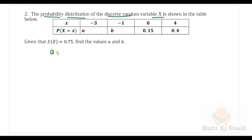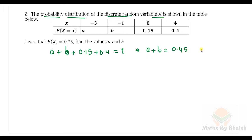From the first condition for a discrete random variable, all probabilities must sum to 1. So: a + b + 0.15 + 0.4 = 1. This gives a + b = 1 − 0.55 = 0.45. That is equation one.